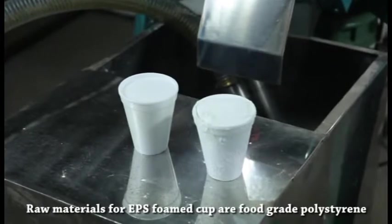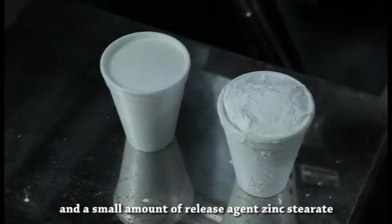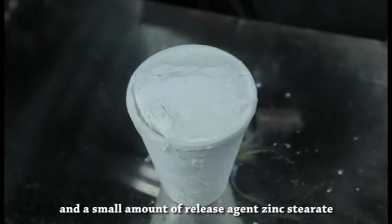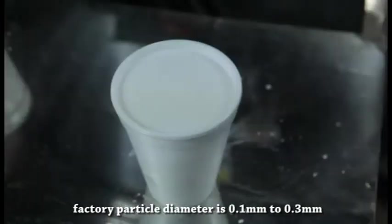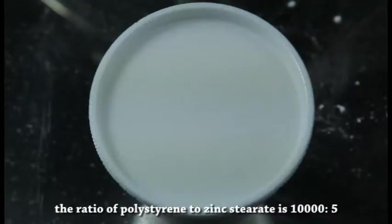The raw materials for EPS foam cups are food-grade polystyrene and a small amount of release agent zinc stearate. Factory particle diameter is 0.1 mm to 0.3 mm. The ratio of polystyrene to zinc stearate is 10,000 to 5.